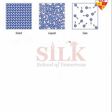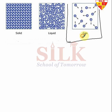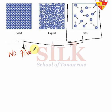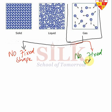Now we are moving towards the third state of matter, which is called gases. The biggest thing about gases — compared to solid and liquid — is that gases do not have a fixed shape and gases do not have a fixed volume.